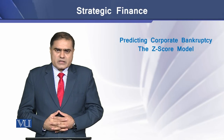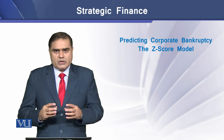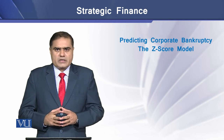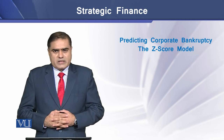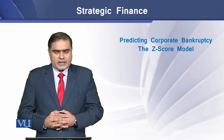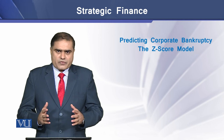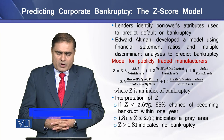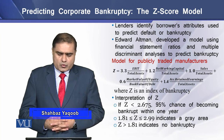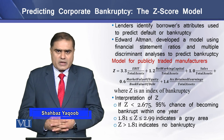Lenders generally use credit scoring models in order to assess the credit worthiness of their prospective borrowers. These lenders try to find factors that help them in discriminating good credit from bad credit. Lenders identify borrowers' attributes used to predict default or bankruptcy in the days to come.